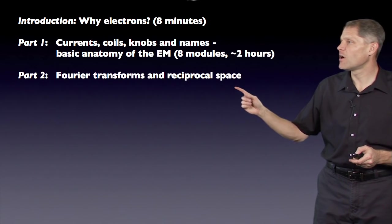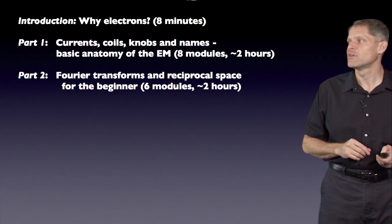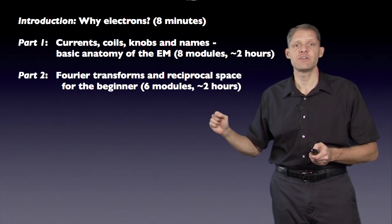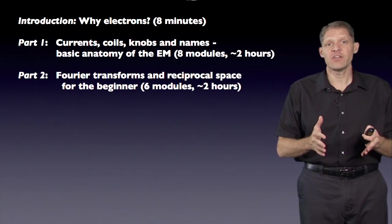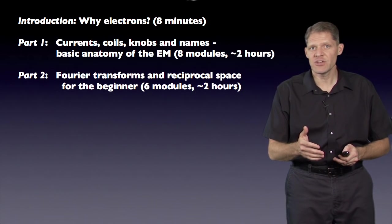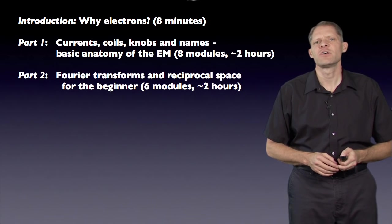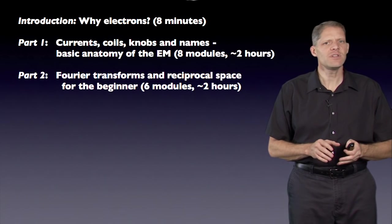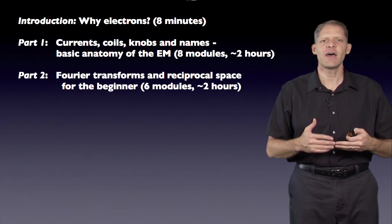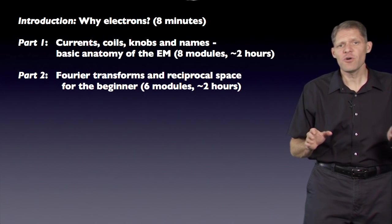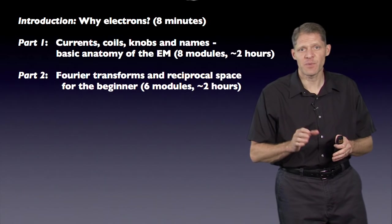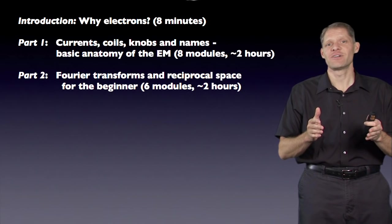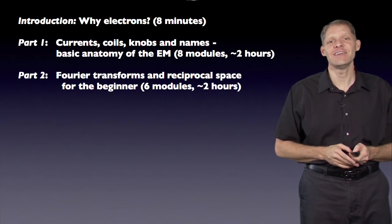The next part is called Fourier Transforms and Reciprocal Space for the Beginner — about two hours of material separated into six different modules. Here I'll explain what a Fourier transform is in one dimension, two dimensions, three dimensions, and a little bit about convolution and cross-correlation. This module really starts at the very beginning with the idea of sine waves being added. So if you're an expert who already knows about Fourier transforms and reciprocal space, you might want to skip this part — unless you think you'll be teaching this someday and would like to see how I give it a shot.